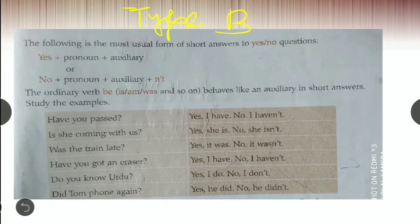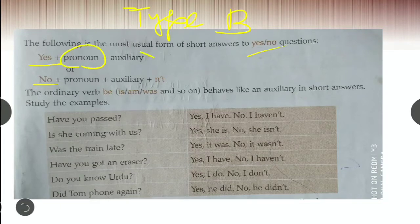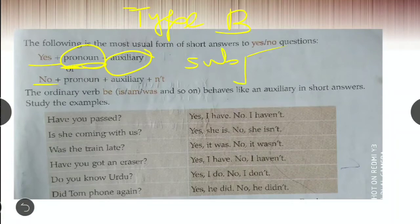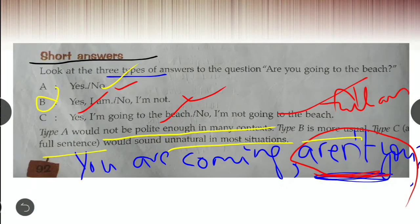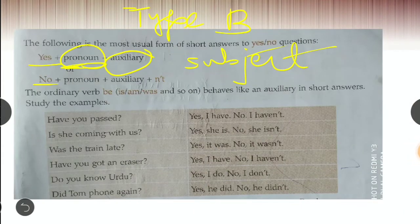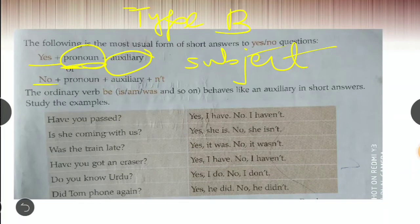Now you are going to study type B, the short answers. How can you make a short answer? First, obviously, if a question is asked to you, you will begin it by yes or no. And then the pronoun, then the auxiliary. Pronoun means subject. See over here, in the question tag, auxiliary verb and pronoun came. But when giving an answer, first your yes or no will come, then pronoun, then auxiliary.